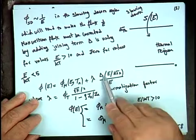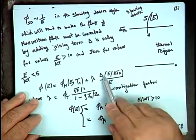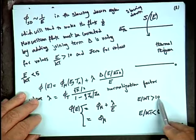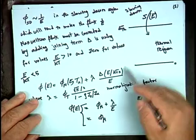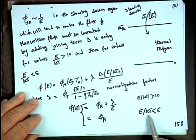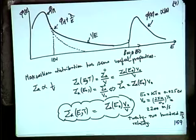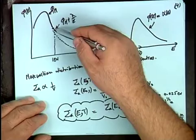The combined flux is written as the Maxwellian flux plus λ multiplied by a shaping function δ, where δ is a function of E/kT_N. If E/kT_N > 10, δ = 1 and you have Maxwellian plus 1/E. If E/kT_N < 5, δ = 0 and the distribution is fully Maxwellian.